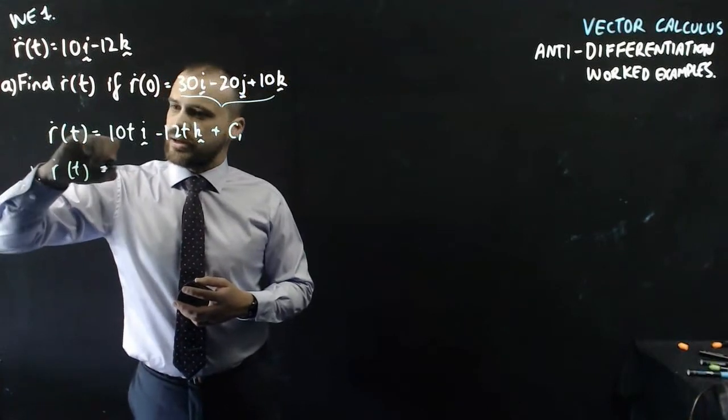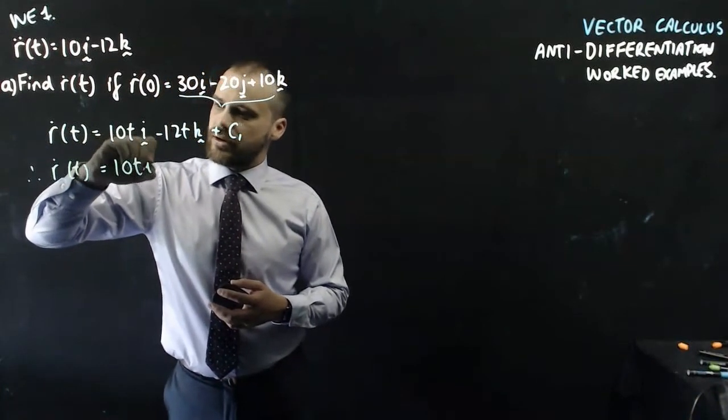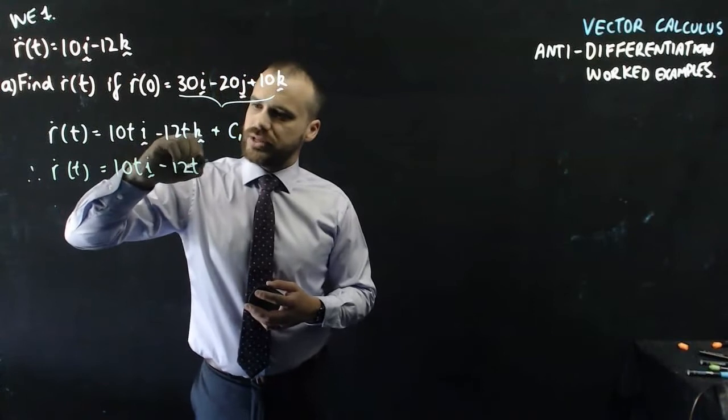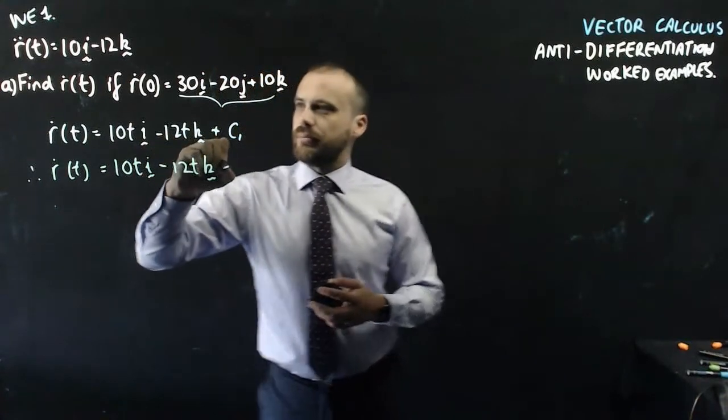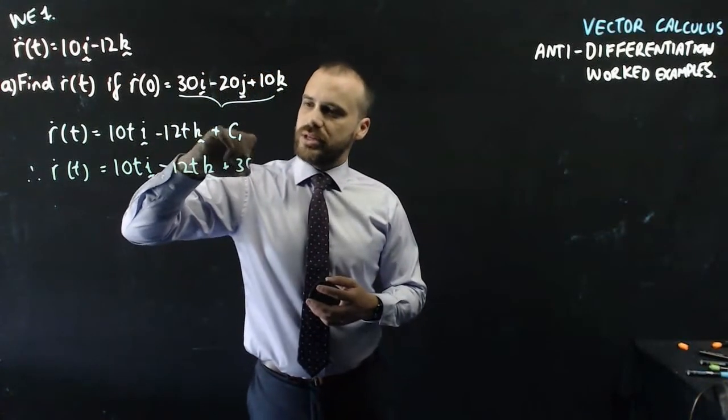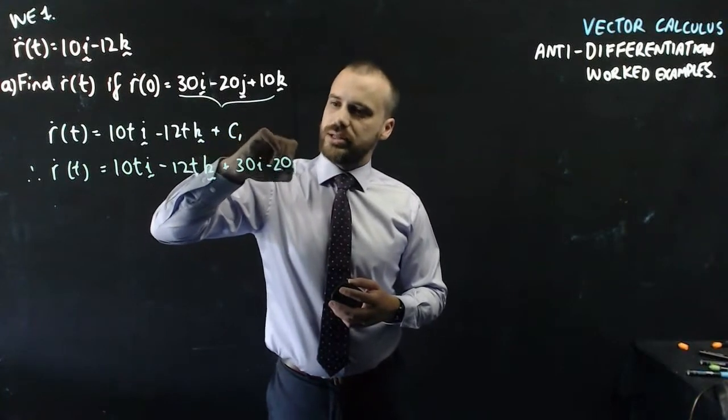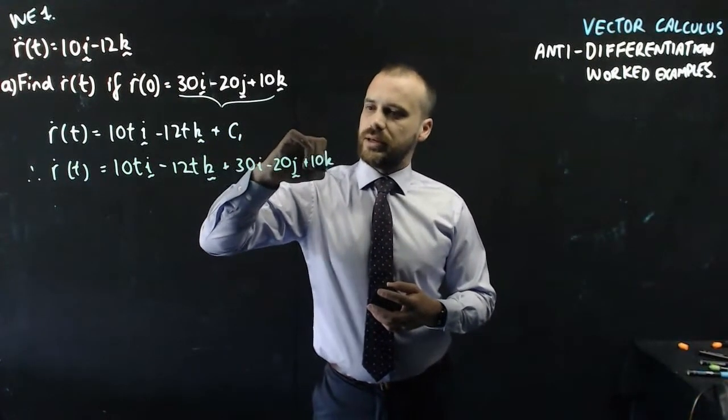So therefore, r dot t equals 10t, i minus 12t, k plus 30, i minus 20, j plus 10, k.